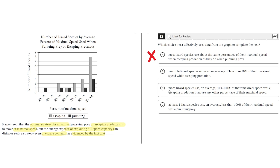Option C: More lizard species use, on average, 90% to 100% of their maximal speed while escaping predation than use any other percentage of their maximal speed. Looking at the graph, this is true — most lizard species do use 90% to 100% of their maximal speed when escaping — but this doesn't support the claim in the text, so C is incorrect.